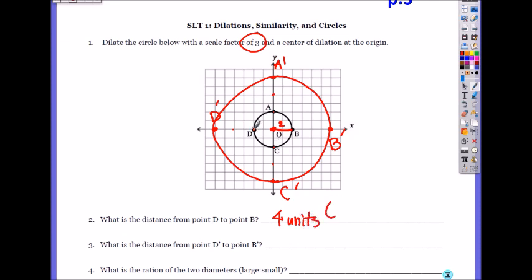And what is D to B called? It's a diameter of a circle. The line that goes through the center to the edge of the circle.